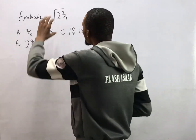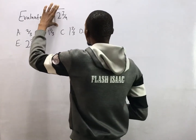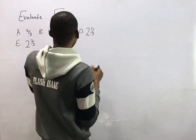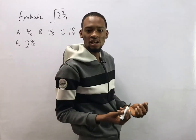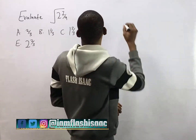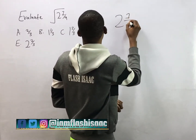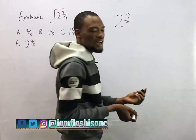Now this is square roots, and when you have something like this it is called a mixed fraction. So this is 2 and 7 over 9.